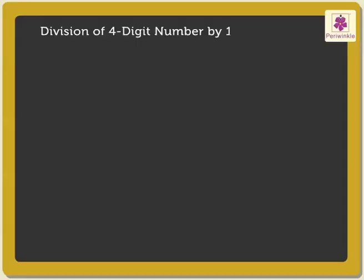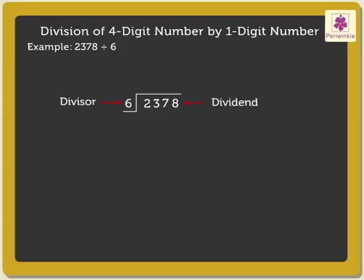Next is the division of a 4-digit number by a 1-digit number. Here, we will divide 2378 by 6. Let us start by comparing the first digit 2 and divisor 6. 2 is smaller than 6, so there are not enough thousands. Now, compare the hundreds: 23 is greater than 6, and therefore we divide 23 by 6.